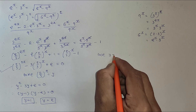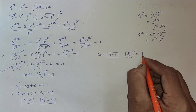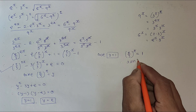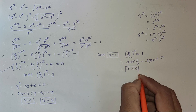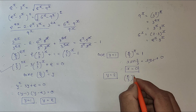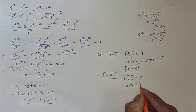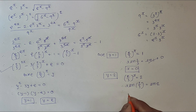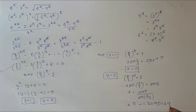Case 1: when y equals 1, then (2/3) to the x equals 1. So x times ln(2/3) equals ln(1) equals 0, giving x equals 0. Case 2: when y equals 2, then (2/3) to the x equals 2. Taking log of both sides: x times ln(2/3) equals ln 2, so x equals ln 2 divided by ln(2/3), which is approximately minus 1.70951129. And that is the answer.